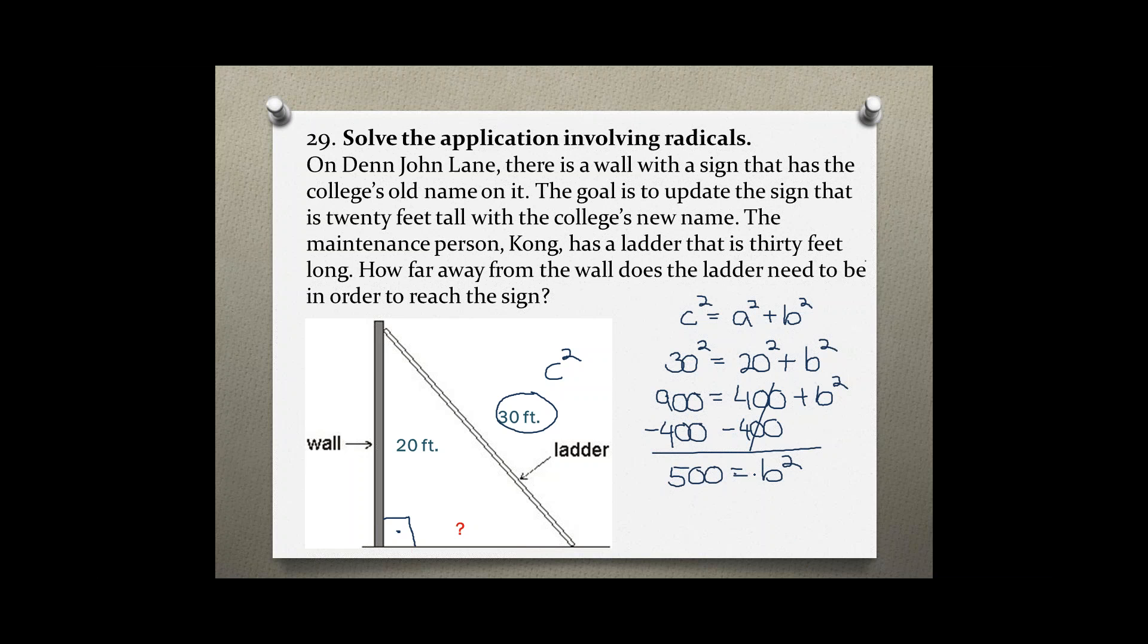Now we can use the square root property to eliminate the square on the b and when we do that we will get a positive and a negative answer. So the square root and the square cancel out, b is by itself, and 500 is not a perfect square so when we plug that into the calculator we get approximately 22.36.